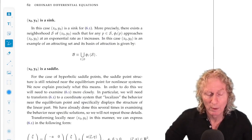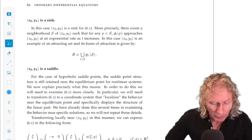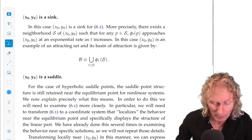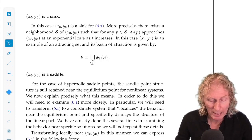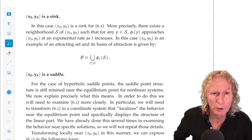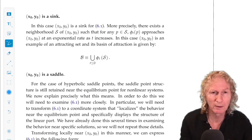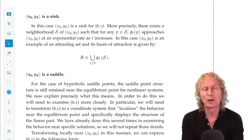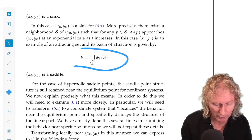A sink. Well, the result is, if you have a sink, a hyperbolic sink in the linear approximation, then it's also a sink for the nonlinear equations. Now, what does it mean? It means that you can find a neighborhood, we're going to call it S now, of (x_0, y_0), such that for any point in that neighborhood, phi_t of p approaches the equilibrium point at an exponential rate. And if you think back to the examples from the last chapter, you know exactly what I mean by that. So, in this case, (x_0, y_0) is an example of an attracting set, so it would have a basin of attraction. And this is what the basin of attraction is.